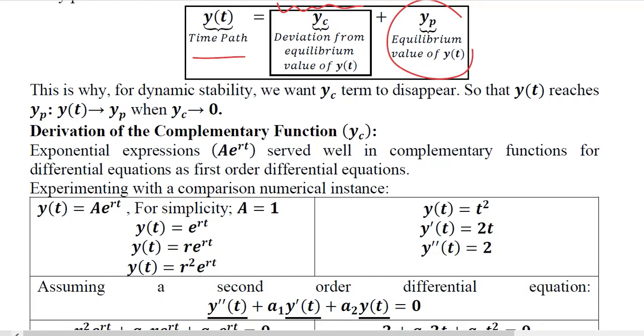Now let us try to develop the complementary function in this case. But before we go there we must remind ourselves that Yc is basically the deviation from the equilibrium and if it disappears over time it means that we are converging towards the equilibrium and the deviation is approaching to zero.